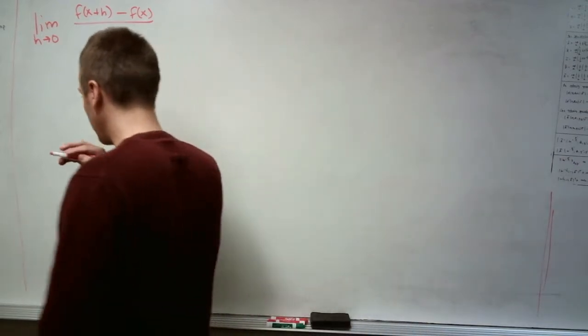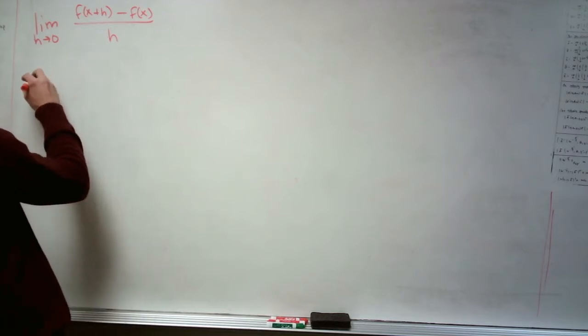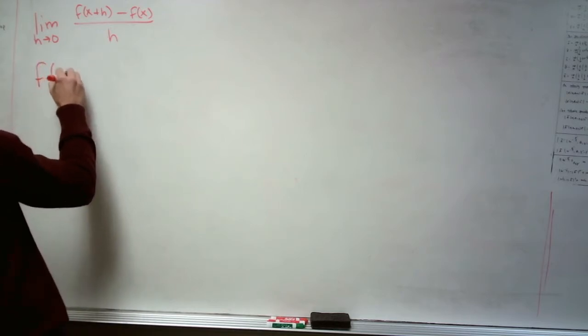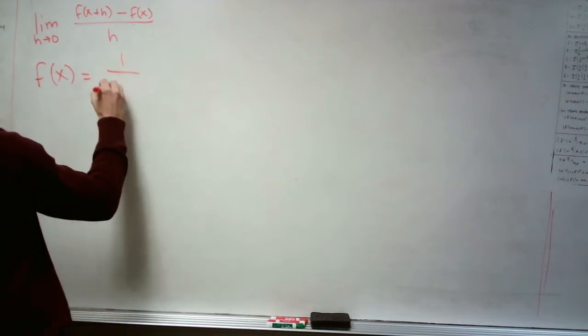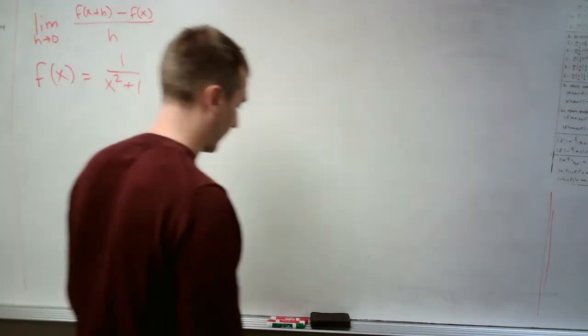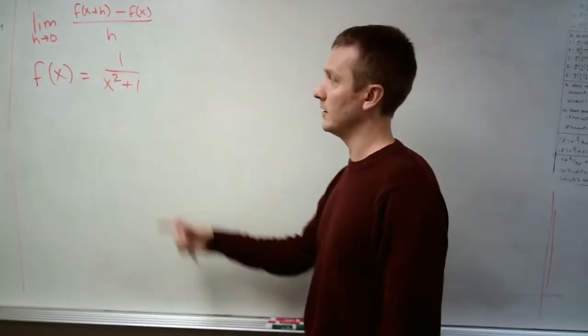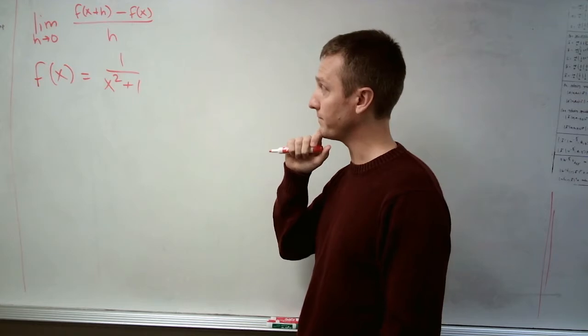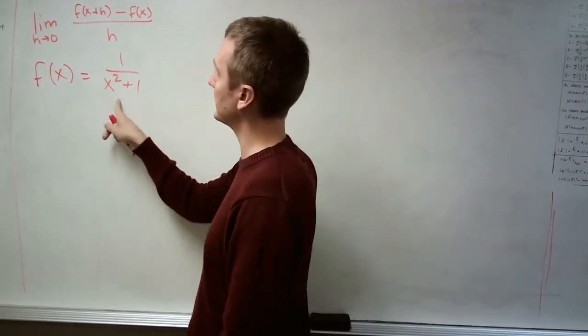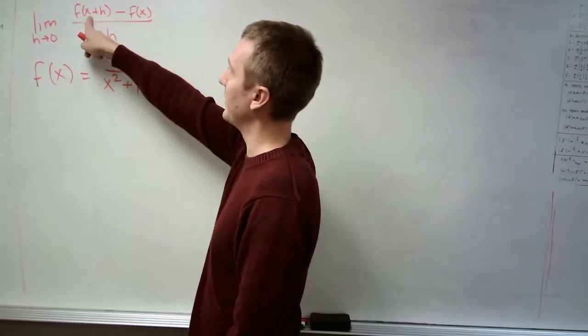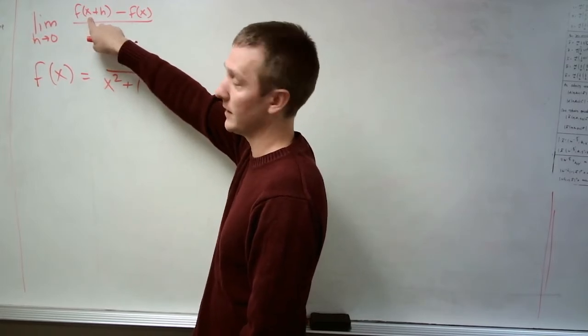So the function we'll be taking a look at first here is f of x equaling 1 over x squared plus 1. It's a rational function, a little bit different than things we've looked at before. First thing you always need to find after knowing your function is everything else that you don't know in this definition of a derivative.